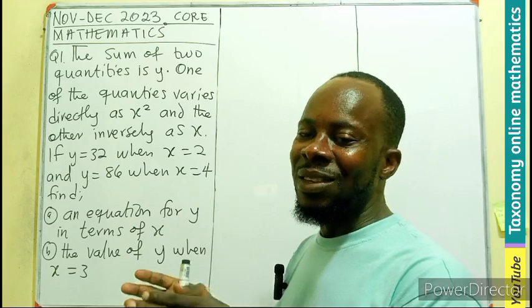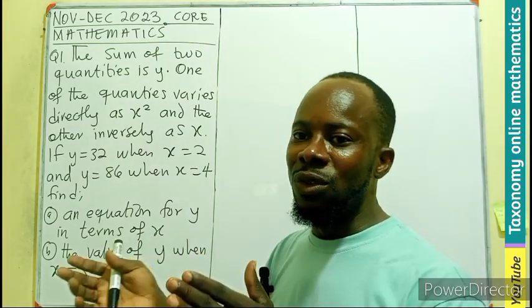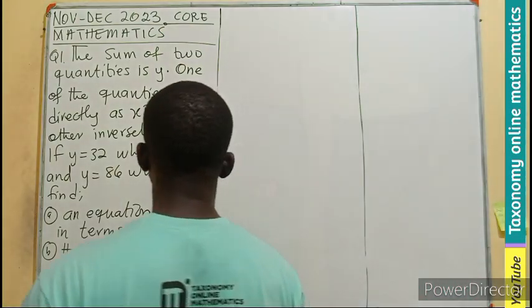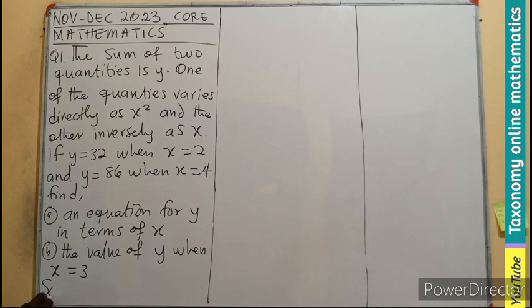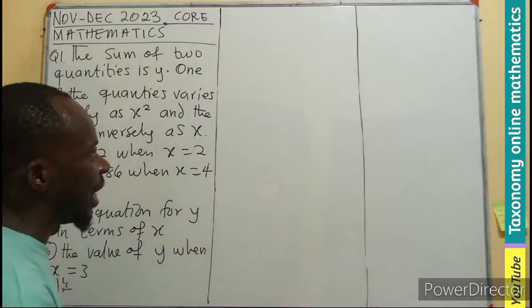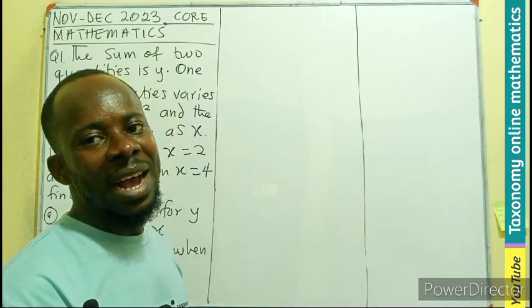So this is a variation. This is more or less like a partial variation. So we are going to find the sum of those two quantities. So since there are two quantities, let's just say solution. So let the two quantities, one be P and the other be Q.